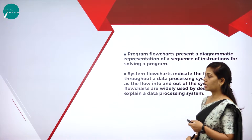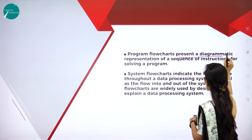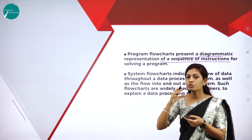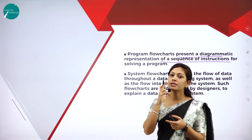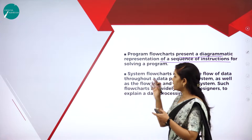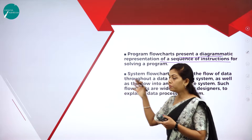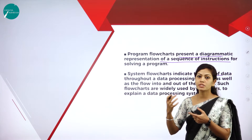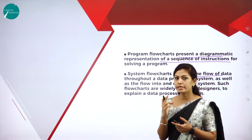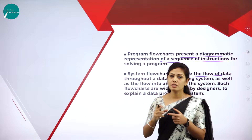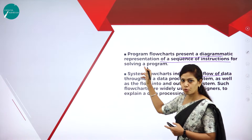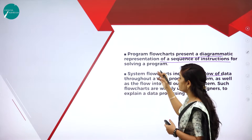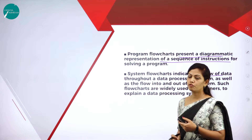Flowchart can be classified into program flowchart and system flowchart. A program flowchart presents a diagrammatic representation of a sequence of instructions for solving a problem — it represents a single program. A system flowchart indicates the flow of data throughout a data processing system — it represents an entire system. This is the difference between program flowchart and system flowchart.